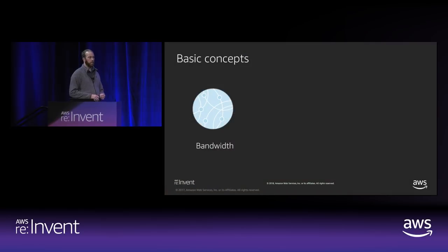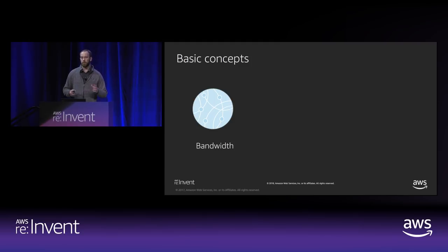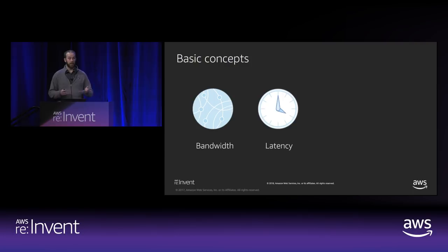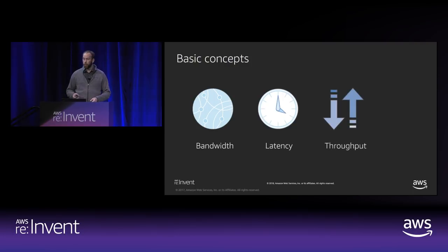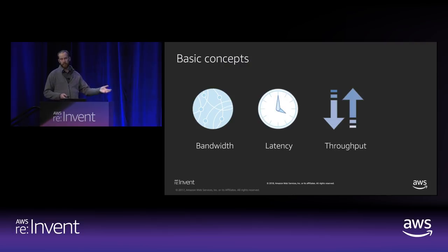Bandwidth is essentially how big the possible throughput is for a link — so a 10 gigabit per second link has that bandwidth. That's what a lot of people focus on, but it's quite often not the major impact for performance. Latency — how long it takes for a packet to go from one place to another — is more often the cause. Throughput is the effective data transfer you actually get on that bandwidth, and that's what applications actually depend on.